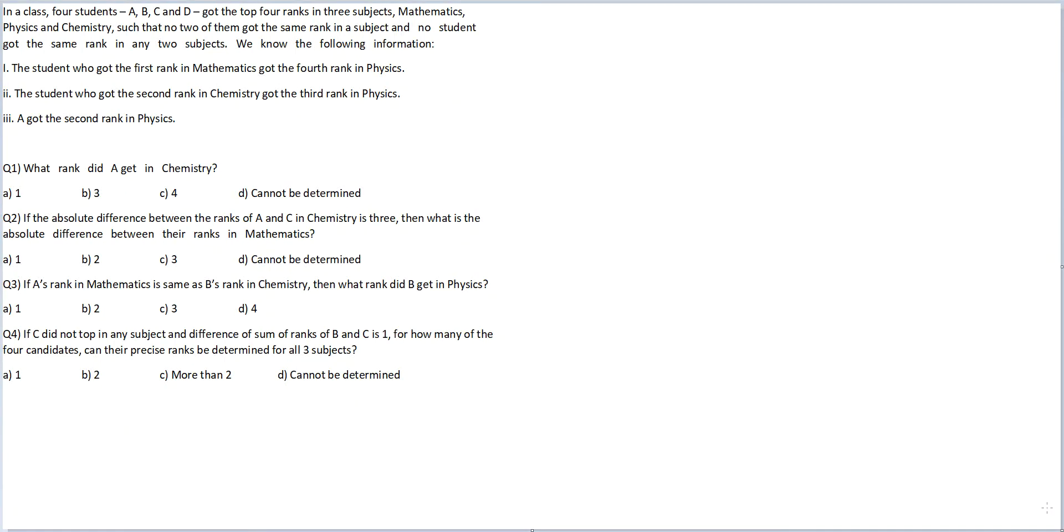Let's look at this question. In a class, 4 students A, B, C, D got top 4 ranks in 3 subjects: Maths, Physics and Chemistry, such that no 2 of them got the same rank in a subject and no 2 students got the same rank in any 2 subjects.